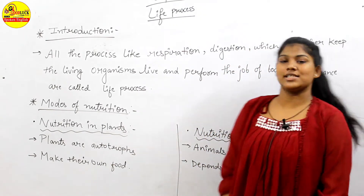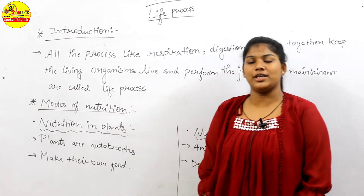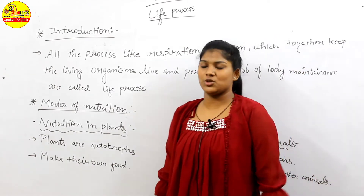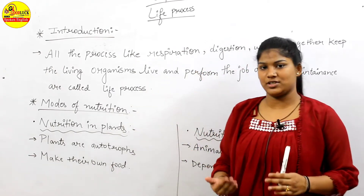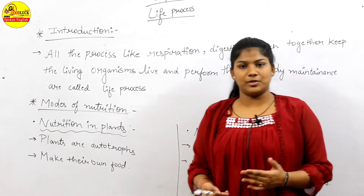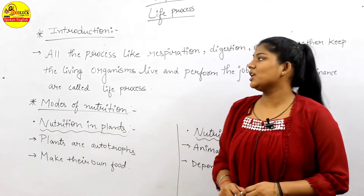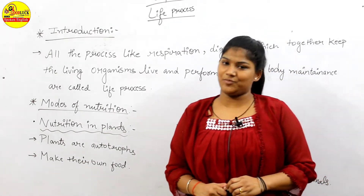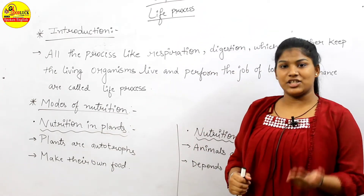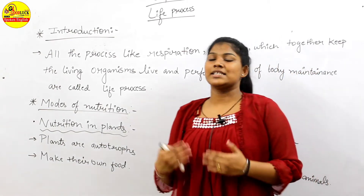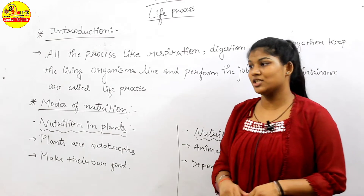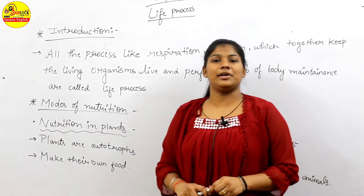What is life process and what do you understand by the life process? There are a lot of life processes in a human body, in a plant body, or in an animal body. Every living being has different types of life processes — digestion, excretion, circulation, and respiration. So these are our life processes.